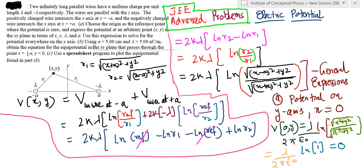Now the question is you have to find the electric potential due to an infinite wire. In this case, two wires are given and these two wires are parallel to the Z-axis. The potential has to be found on the XY plane, and you have to find a general expression in terms of X, Y, a, and lambda.